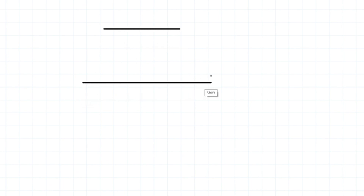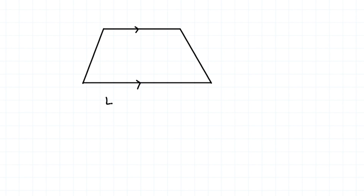Now, what if two sides of our quadrilateral are parallel to each other, but the other two sides are not? In that case, we call this quadrilateral a trapezium. So it has its own special name.